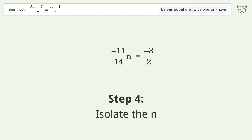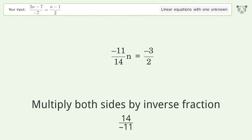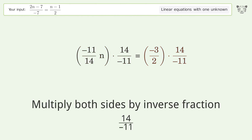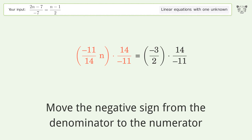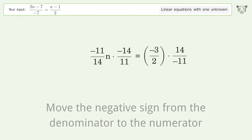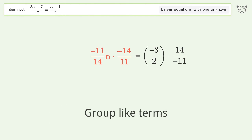Isolate the n: multiply both sides by the inverse fraction 14 over negative 11. Move the negative sign from the denominator to the numerator. Multiply the fractions and group like terms.